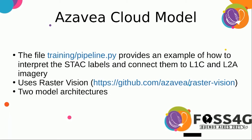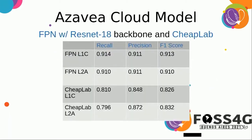The first of these architectures is an FPN with a ResNet-18 backbone. This is a fairly traditional deep learning type model, and I mention that because I'd like to contrast it with our other model type.